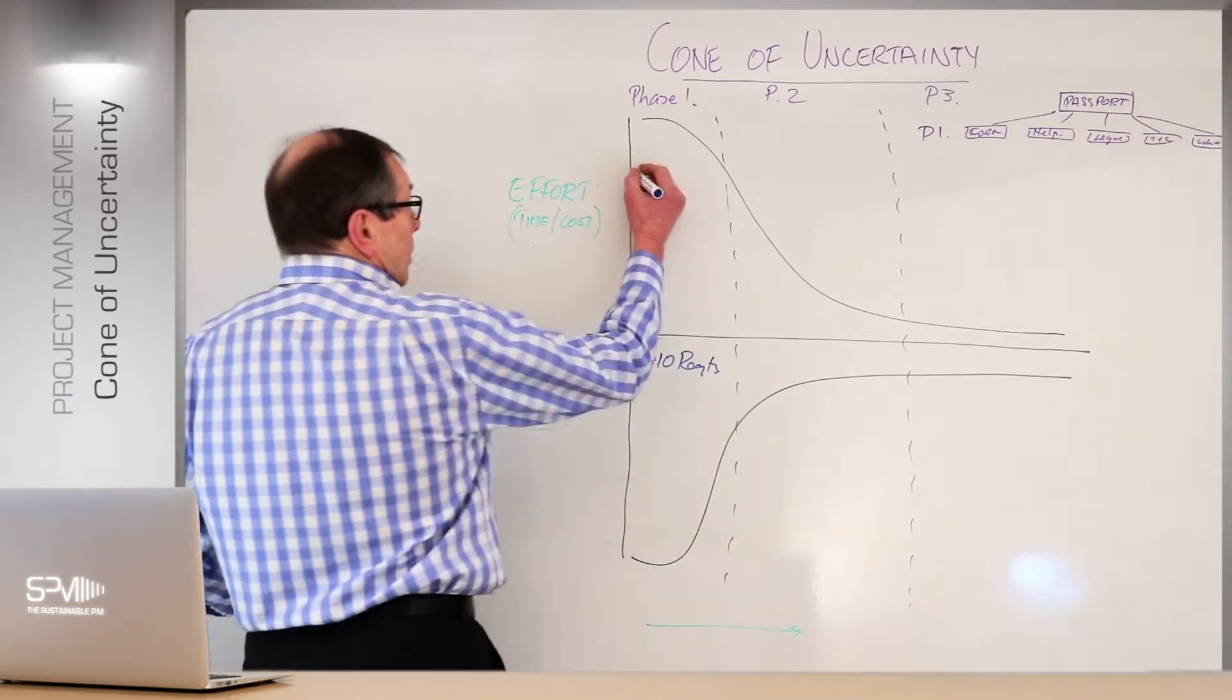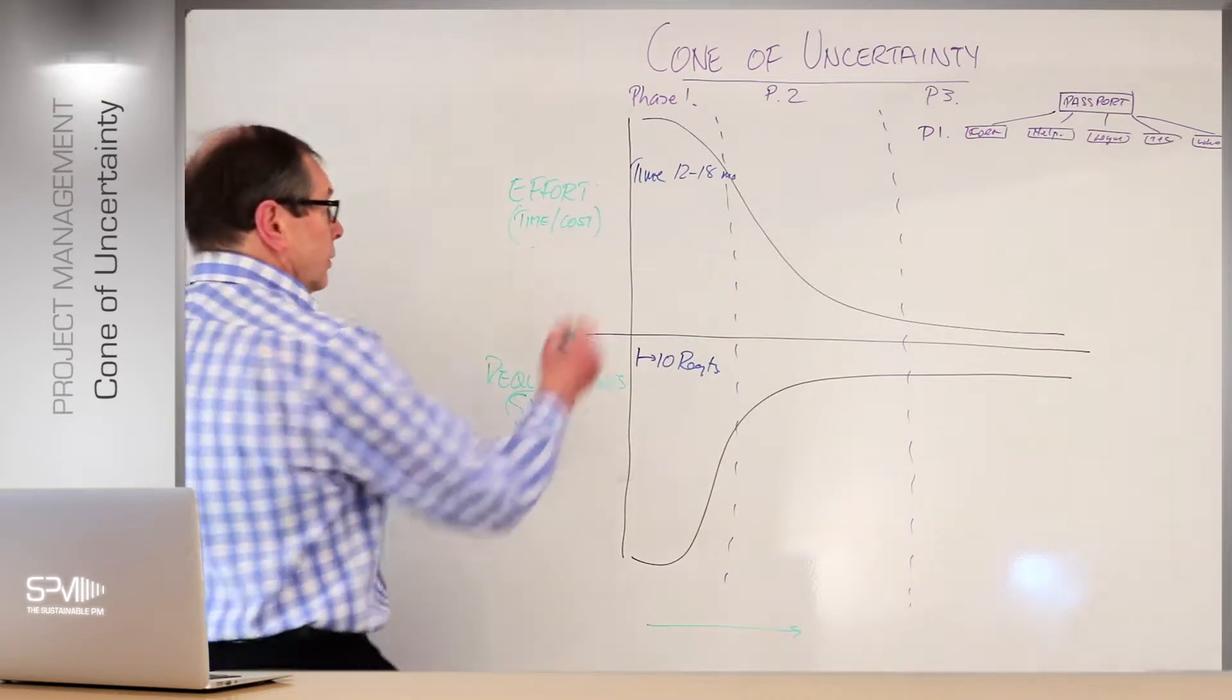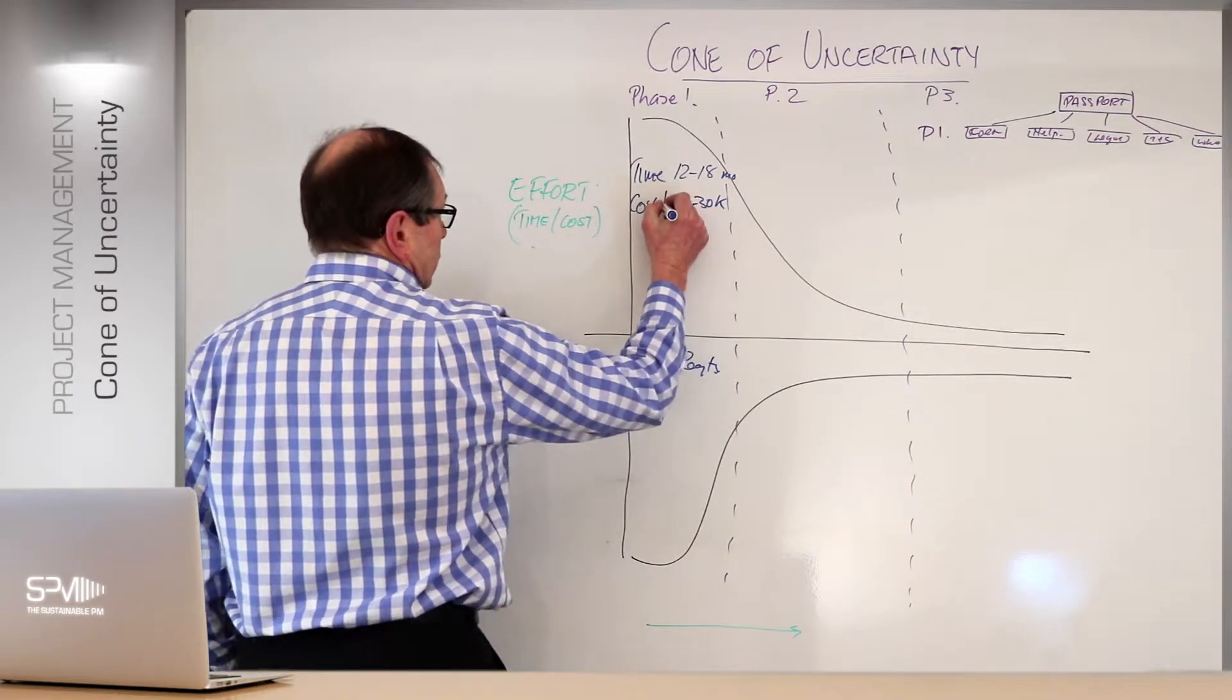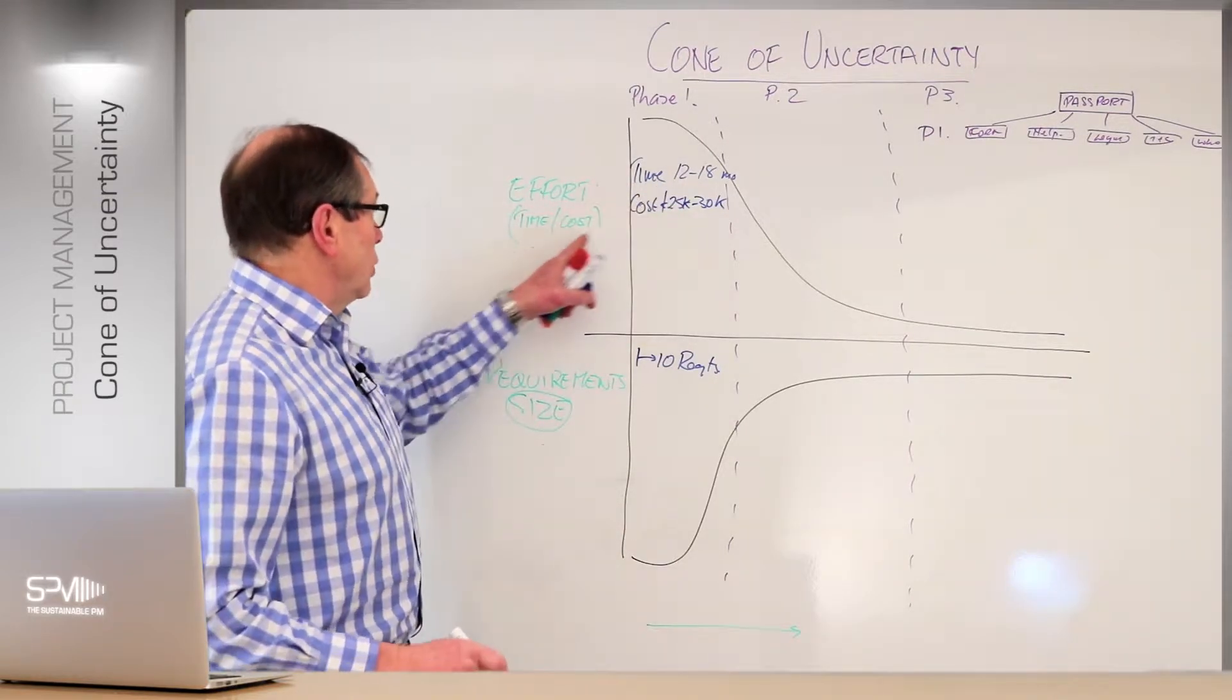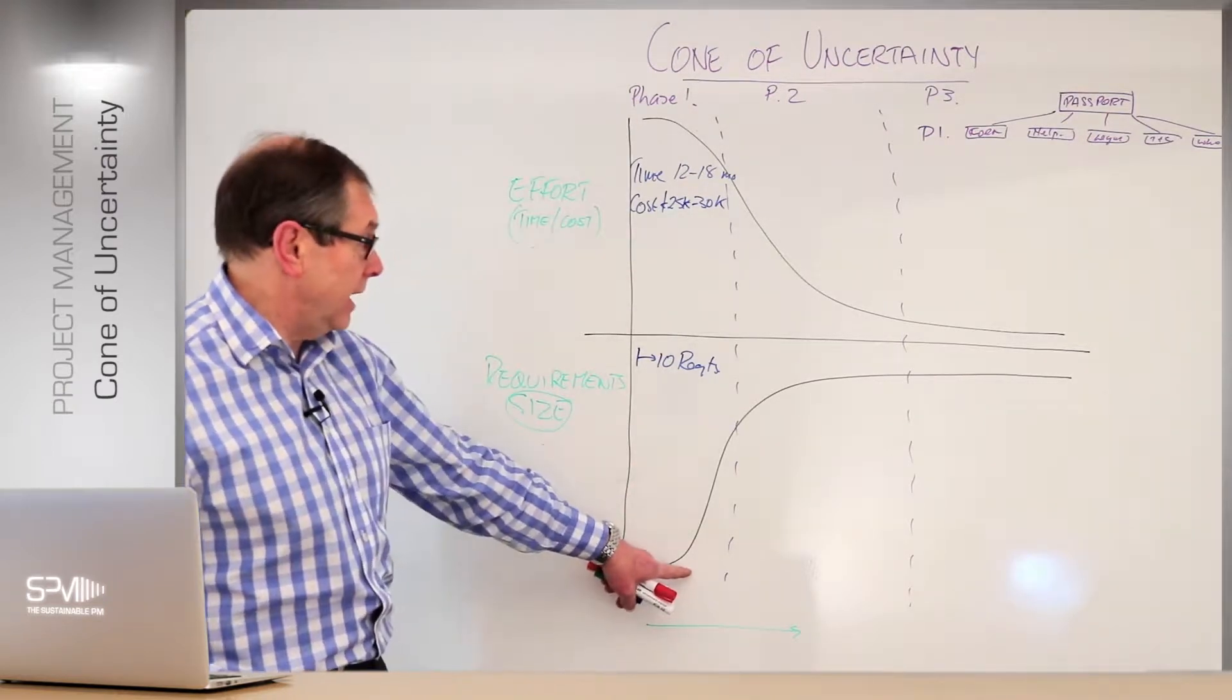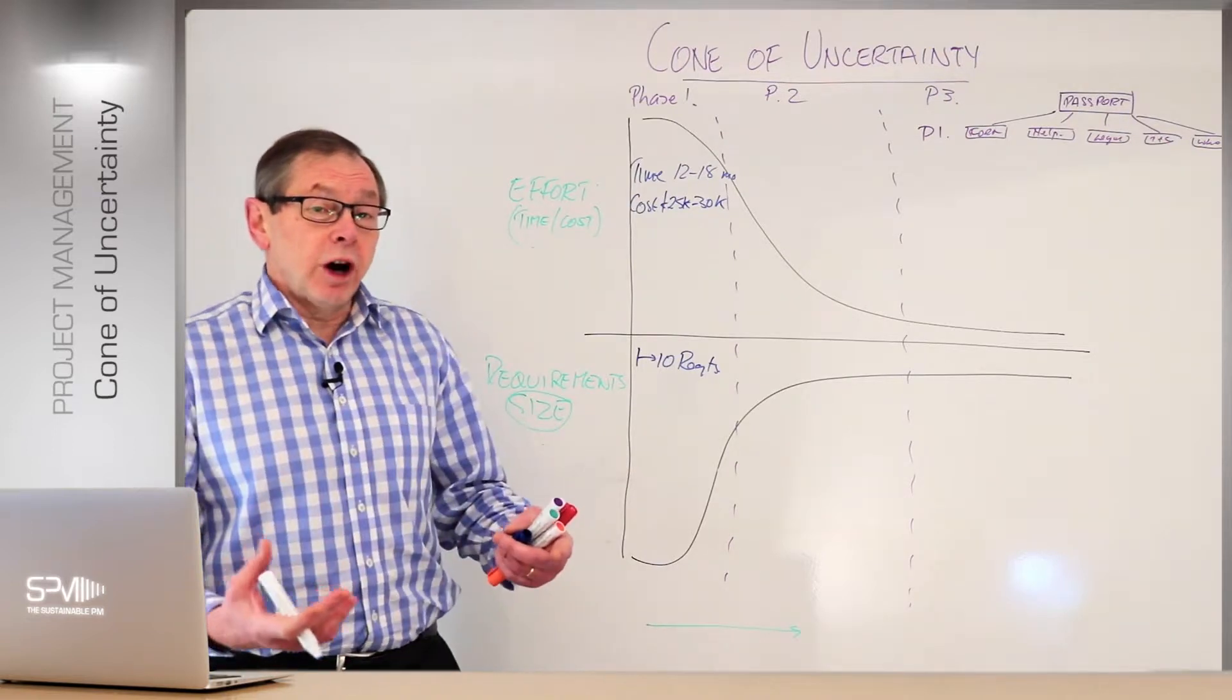Therefore my time could be very broad. It could be, say, 12 to 18 months, and my costs estimated, let's say, 25 to 30,000 pounds or whatever currency you're using. So our time and costs equals the effort here. It's very broad - a very broad understanding because I don't really know that much more at the moment. That's why we've got this sliding curve. It's very flat here.